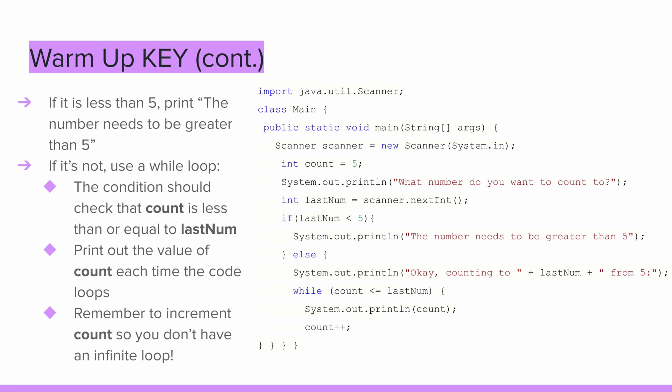Now we can use an if statement to check whether lastNum is greater than 5 or not. If it is less than 5, the program should print out 'the number needs to be greater than 5.' Otherwise, in an else statement, the program will count from 5 to lastNum. This is where we can use a while loop. The while loop should check if the counter variable is less than or equal to lastNum after each iteration. Inside the loop, all we have to do is print out the value of count and add 1 to it.